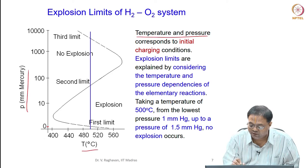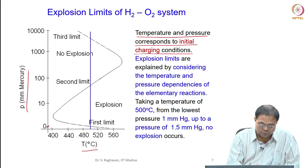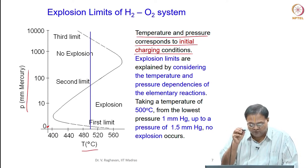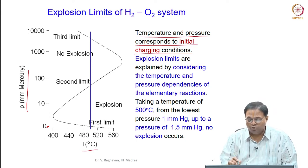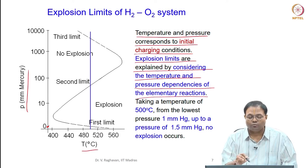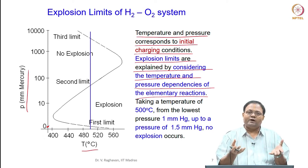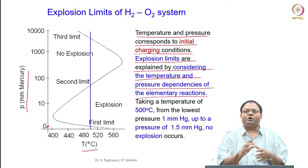This temperature and pressure corresponds to the initial charging condition - this will be the pressure of the charge. The temperature at the charging condition is what is the temperature of the chamber. With that temperature, whether there will be ignition or not is going to be ascertained. Explosion limits are explained by considering the temperature and pressure dependencies of the elementary reactions. It is completely kinetically controlled - there is no big flow or concentration gradient inside, no diffusion, no transport processes. The only thing which is going to control this is chemical kinetics.